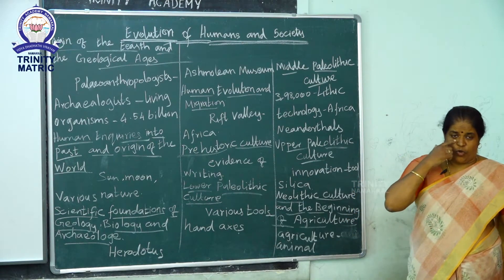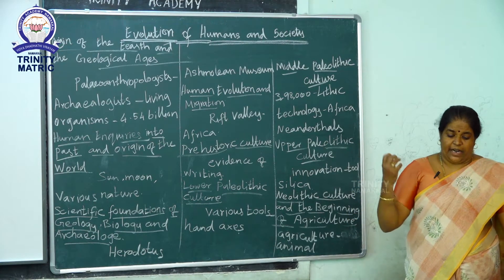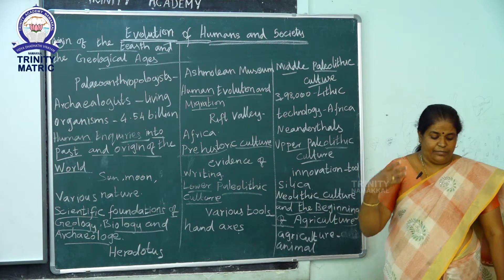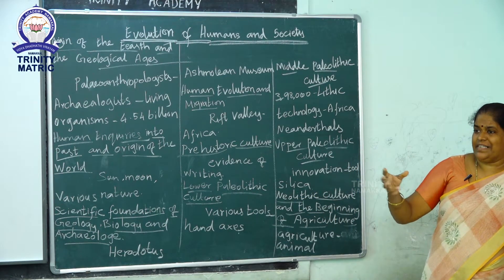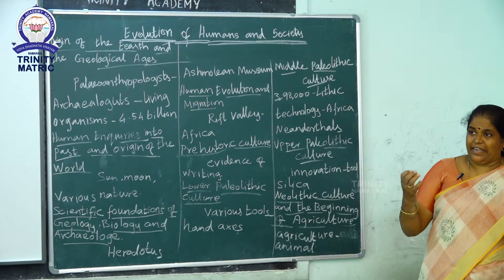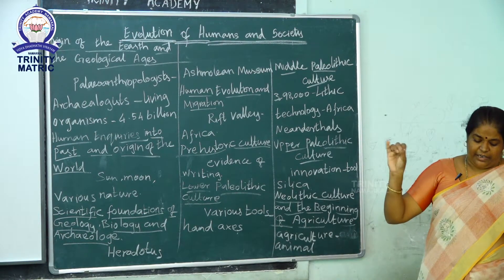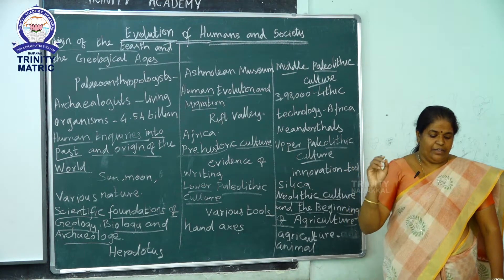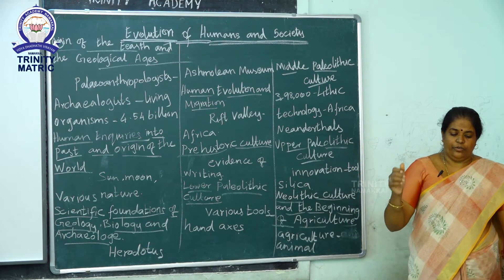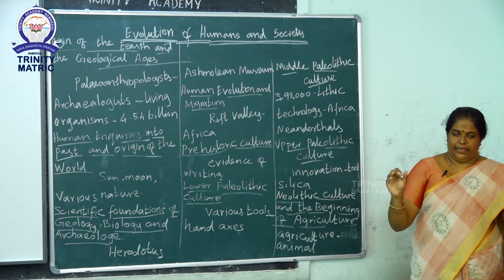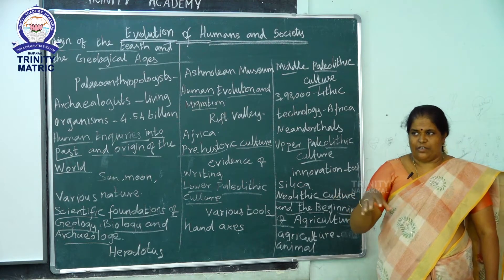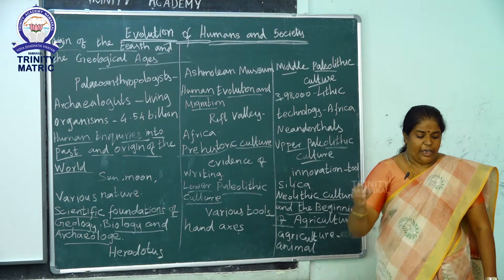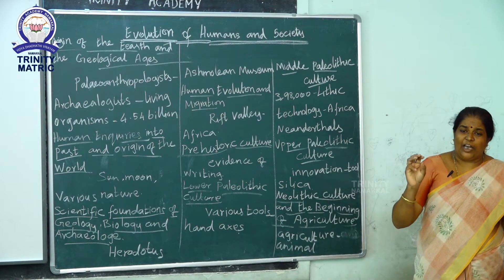Evidence for the Mesolithic culture shows people were involved in hunting and food gathering. These evidences are found in Chennai, North Arcot, Dharmapuri, Salem, Coimbatore, Adyar, Tiruchirappalli, and other districts.